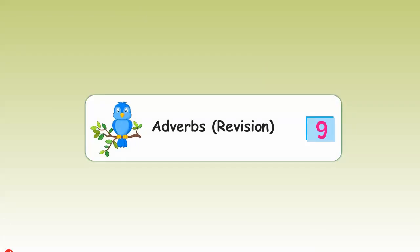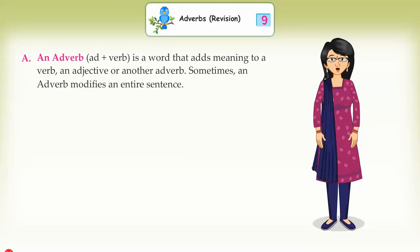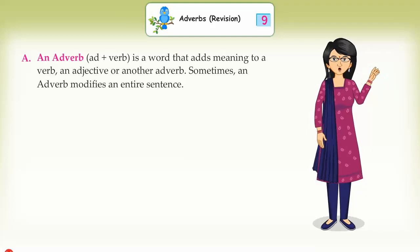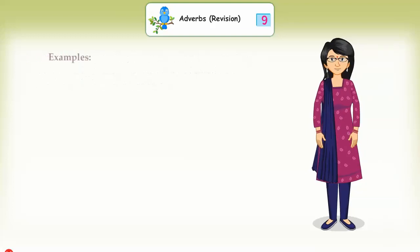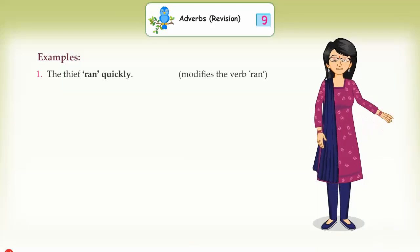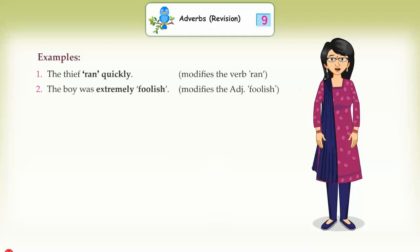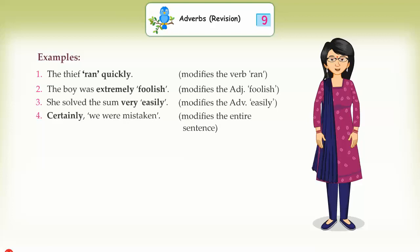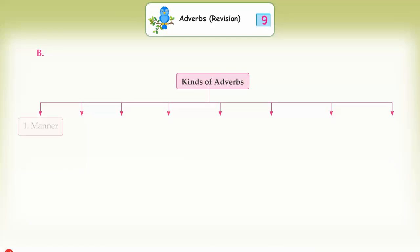Chapter 9: Adverbs Revision. An adverb is a word that adds meaning to a verb, an adjective, or another adverb. Sometimes an adverb modifies an entire sentence. Examples: (1) 'The thief ran quickly' — modifies the verb 'ran'. (2) 'The boy was extremely foolish' — modifies the adjective 'foolish'. (3) 'She solved the sum very easily' — modifies the adverb 'easily'. (4) 'Certainly, we were mistaken' — modifies the entire sentence.